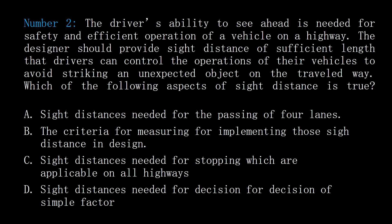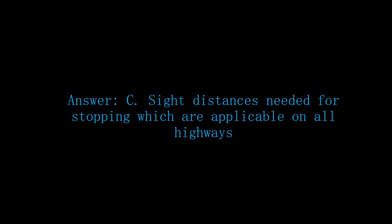Number 2. The driver's ability to see ahead is needed for safety and efficient operation of a vehicle on a highway. The designer should provide sight distance of sufficient length that drivers can control the operations of their vehicles to avoid striking an unexpected object on the traveled way. Which of the following aspects of sight distance is true? A: sight distances needed for the passing of four lanes. B: the criteria for measuring and implementing those sight distances in design. C: sight distances needed for stopping, which are applicable on all highways. D: sight distances needed for decision of simple factor. Answer: C, sight distances needed for stopping, which are applicable on all highways.